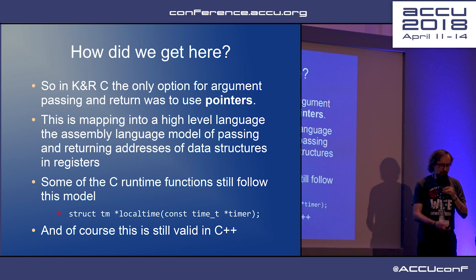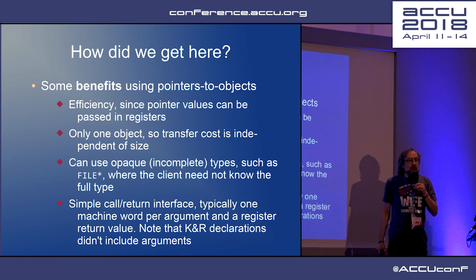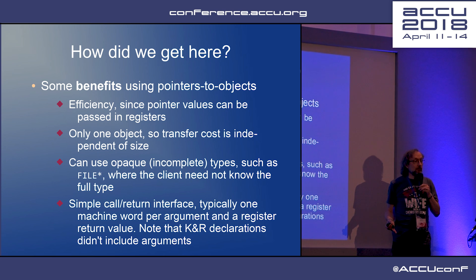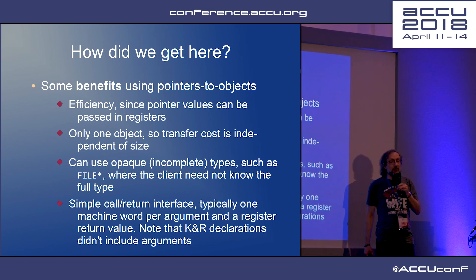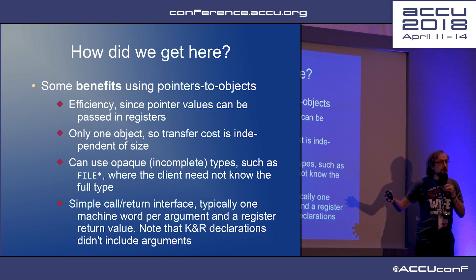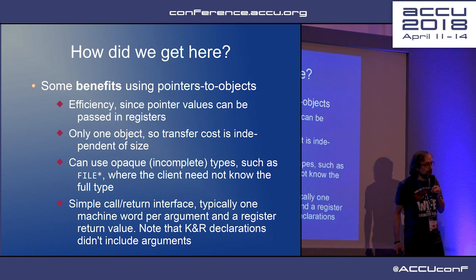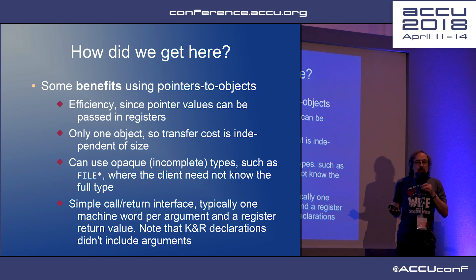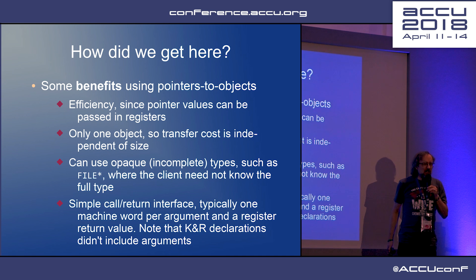What's the problem with pointers? But there are some benefits. Efficiency: you could put everything in a register, whether you were returning a number or a pointer — it fits in one register, a machine word. Only one object: it doesn't matter how big that structure is, you're just passing a pointer to it, so its cost is independent of the size. You can use opaque types — when you open a file in C, you get back an opaque type, a FILE*. Very simple interface. You didn't need function prototypes: put three register values on the stack and get back one. Nice and simple, but a little bit inflexible.